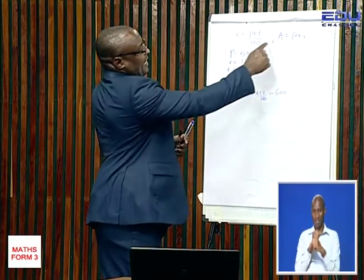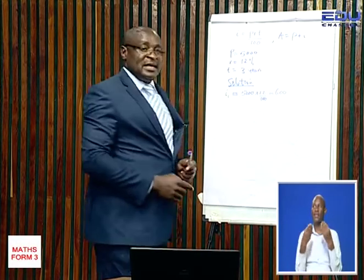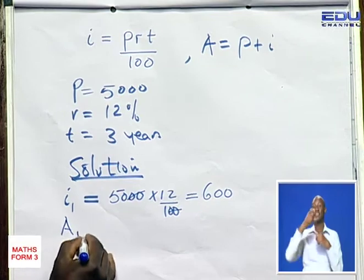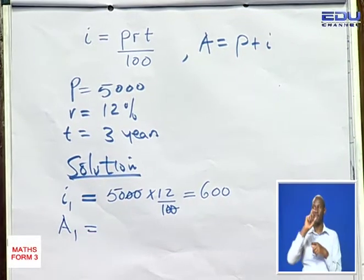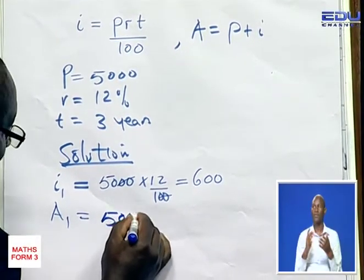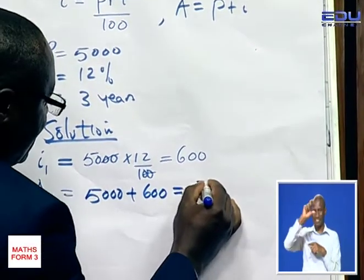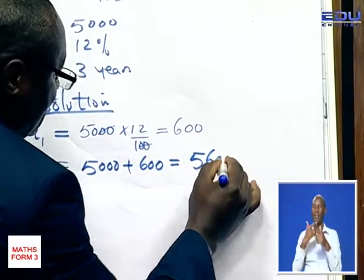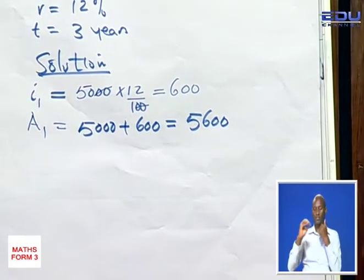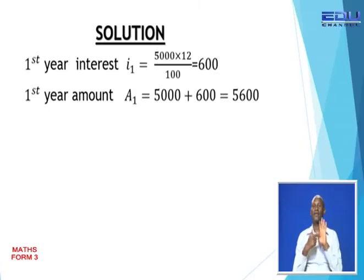We need the amount. Amount is given by principal plus interest. So the amount for the first year is 5,000 plus 600, which equals 5,600, as demonstrated in the slide.